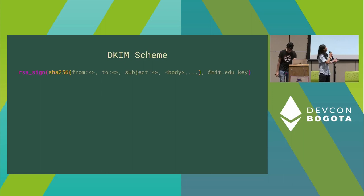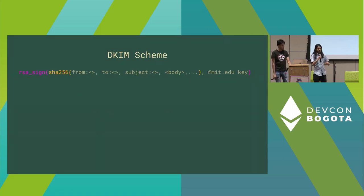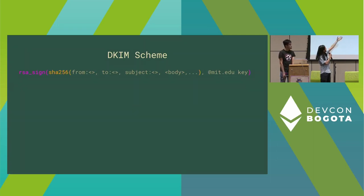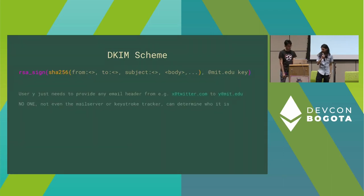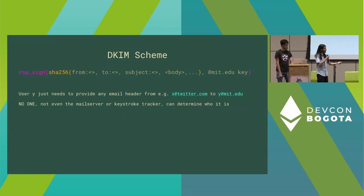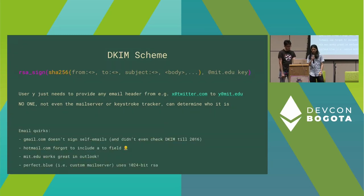What exactly is proof of email or ZK email? Every time you receive an email, you need to know it came from the source it claims to be from. Every email you receive is RSA signed with a SHA-256 hash of the from address, to address, subject, and body hash. This entire hash is RSA signed with a key belonging to the email mail server domain. If a user provides this header or signature and we verify it in zero knowledge, then no one — including the mail server or a keystroke tracker — can verify that someone is using this protocol.